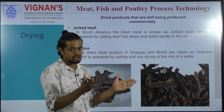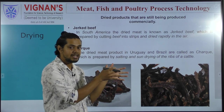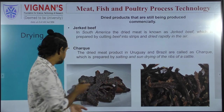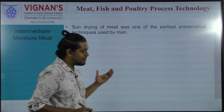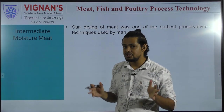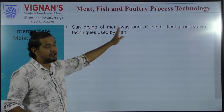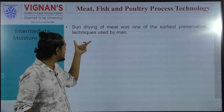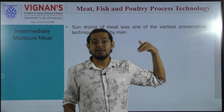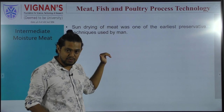Most of the products available on the market or retail shelf are not subjected to a drying process. Only a limited portion of the market — called the niche market — focuses exclusively on dried meat products. Sun drying of meat is one of the earliest preservation techniques used by mankind, used from the earliest stages of human history.